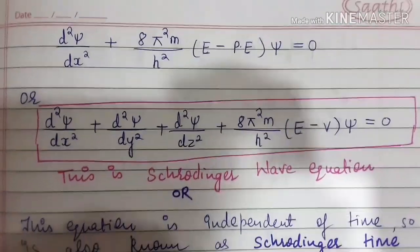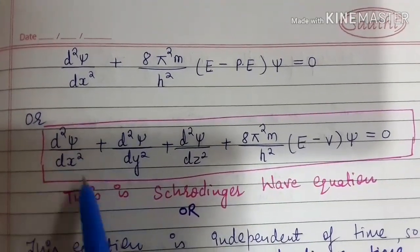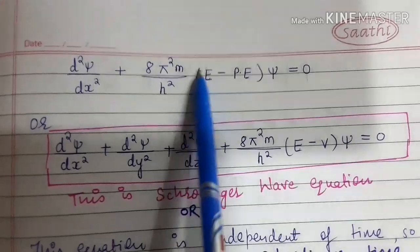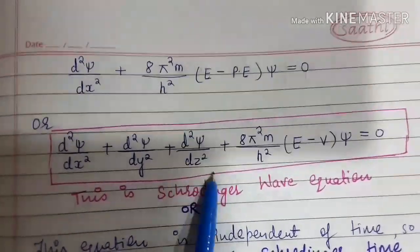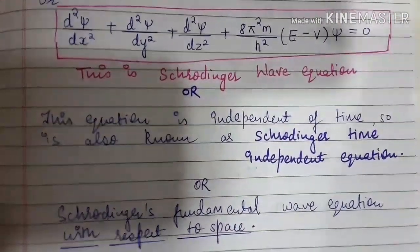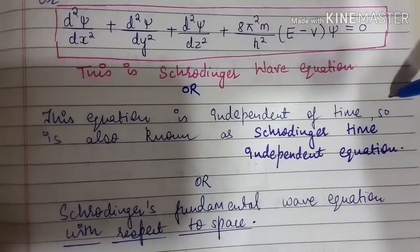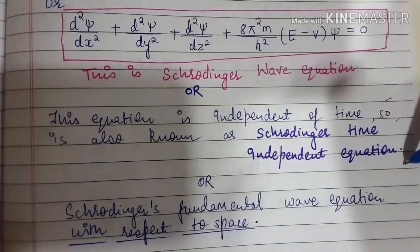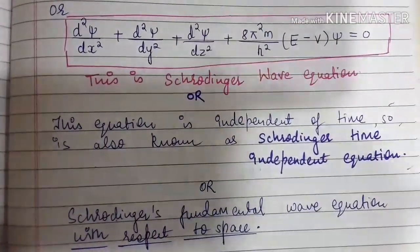By rearranging the equation, considering displacement in the x direction only, we arrive at a result. If we include the x, y, and z directions, all three terms are included in the equation. This equation is known as the Schrödinger wave equation. Since it is independent of time, it is also known as the Schrödinger time-independent equation or the Schrödinger fundamental wave equation with respect to space.